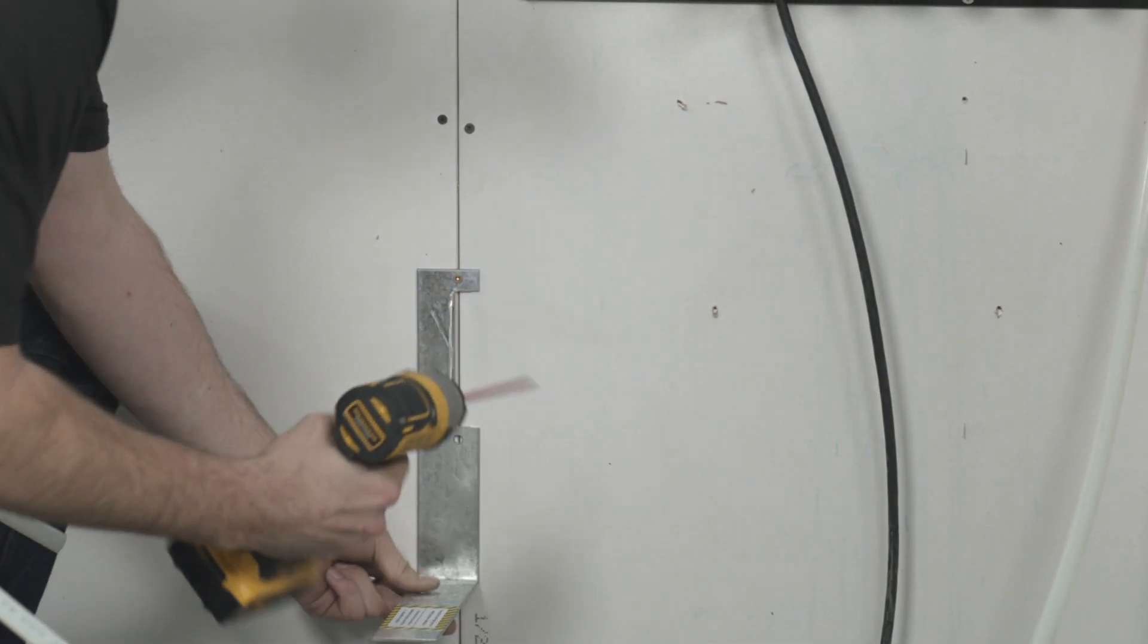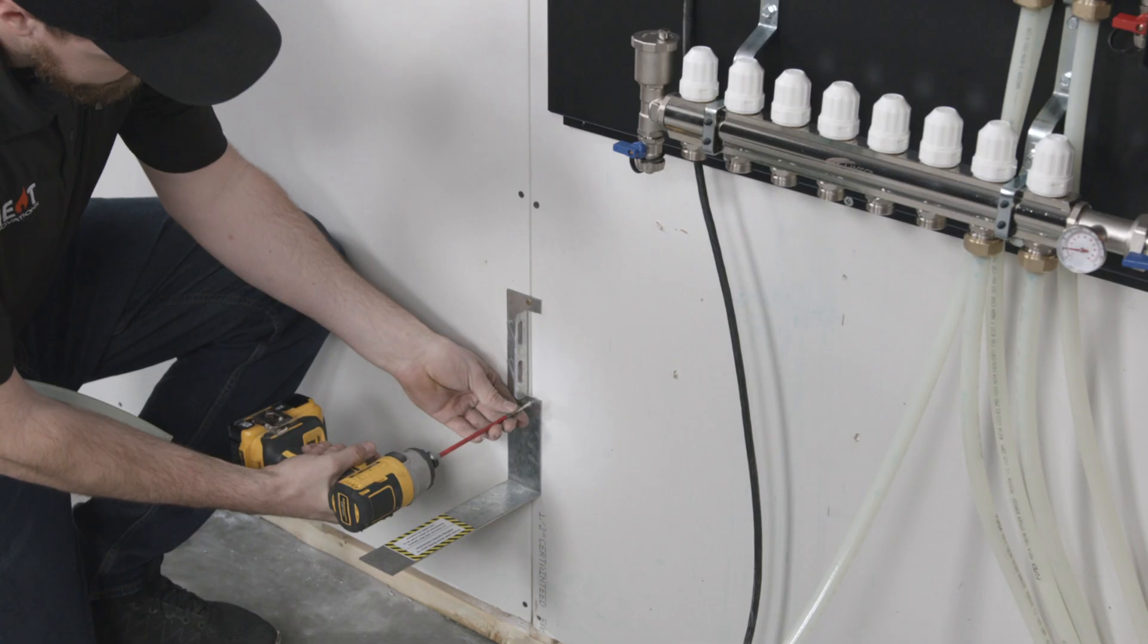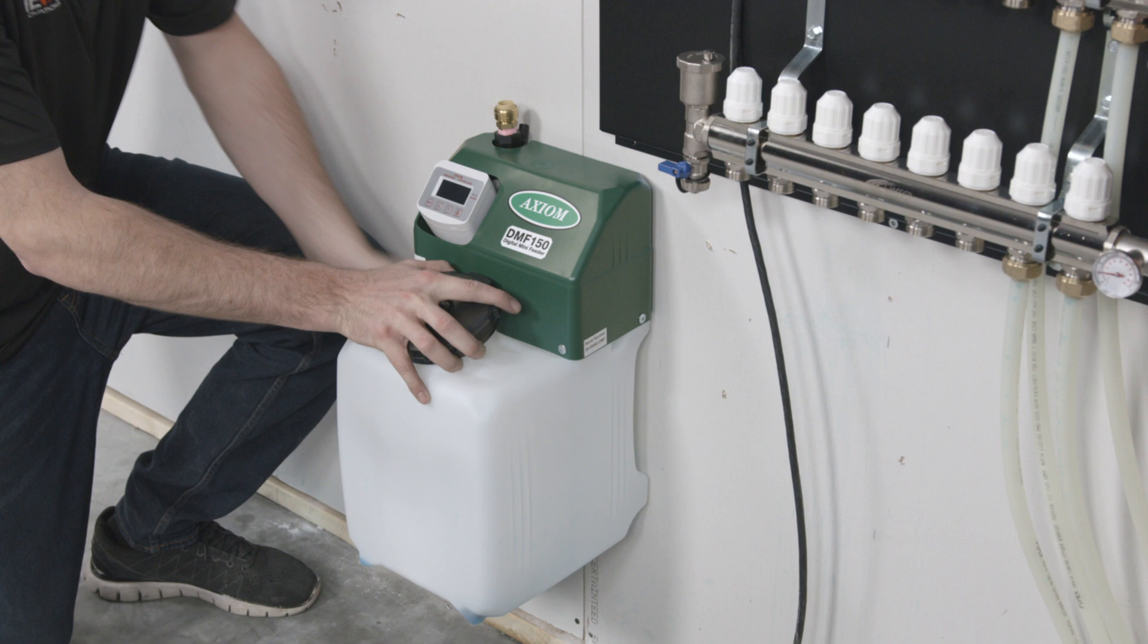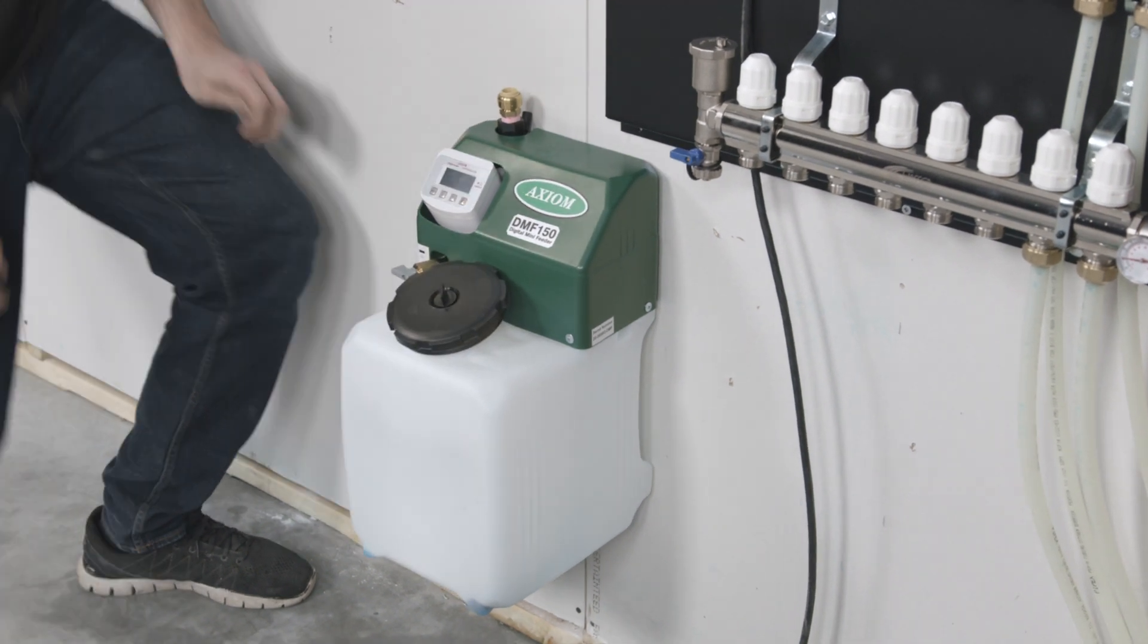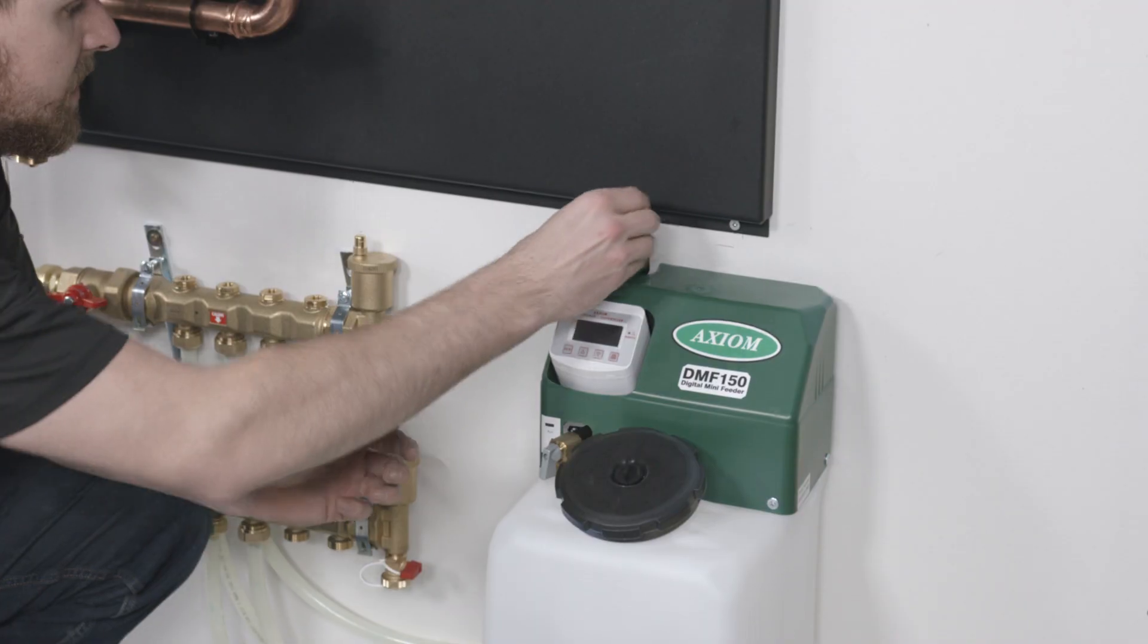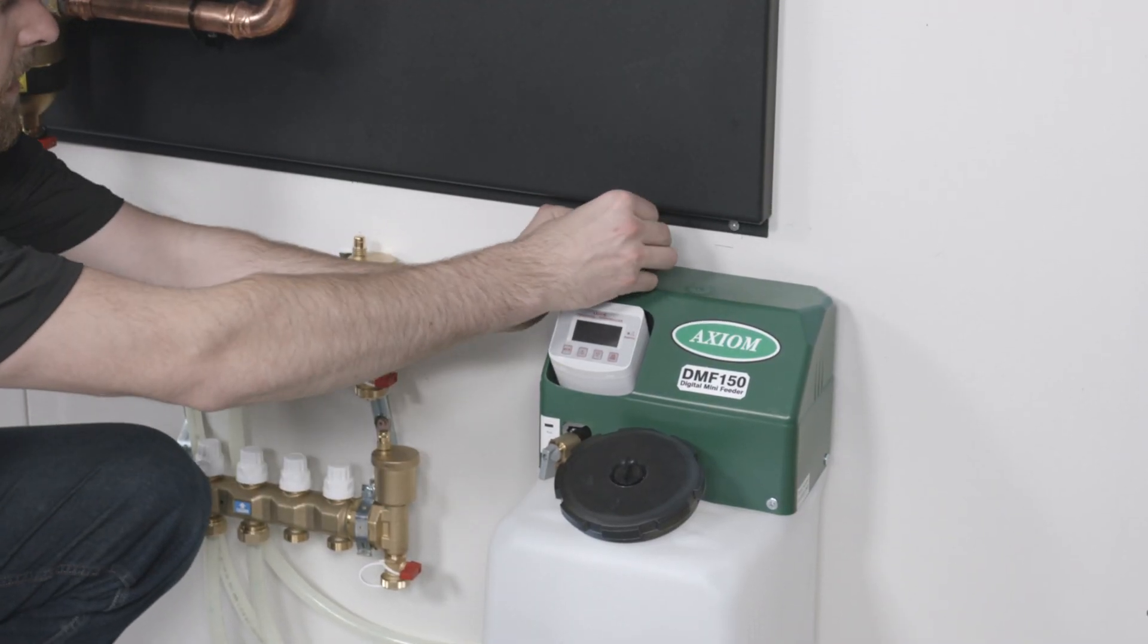Mount the glycol feeder mounting bracket to the wall. Set the glycol feeder on the bracket. Thread in the supplied push-fit adapter to the half-inch threaded connection at the top of your glycol feeder.